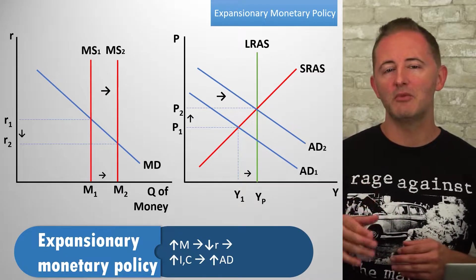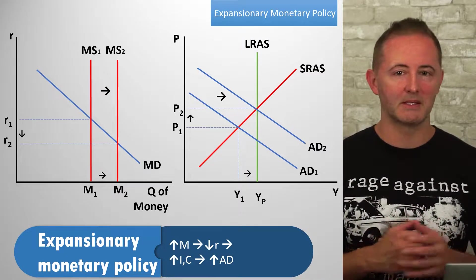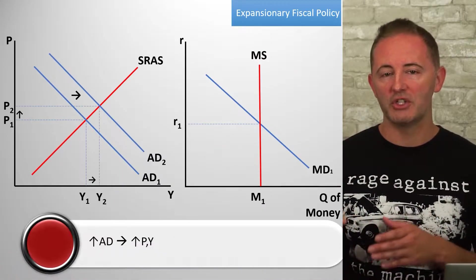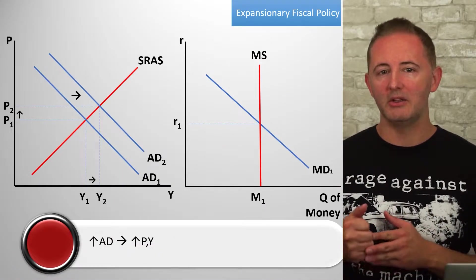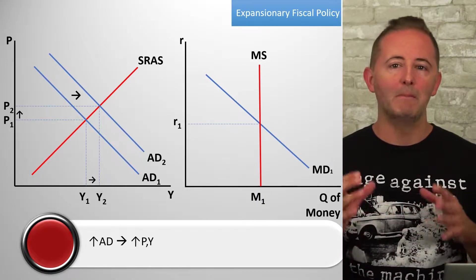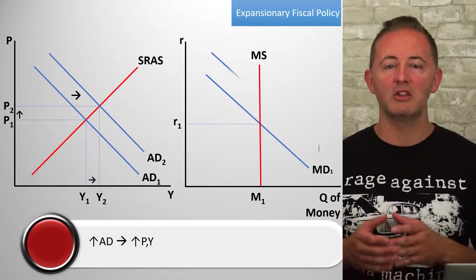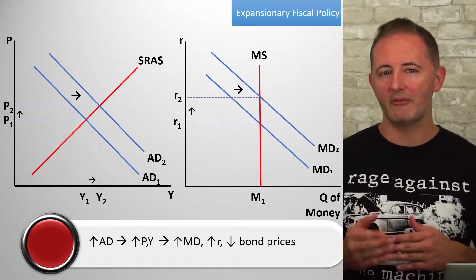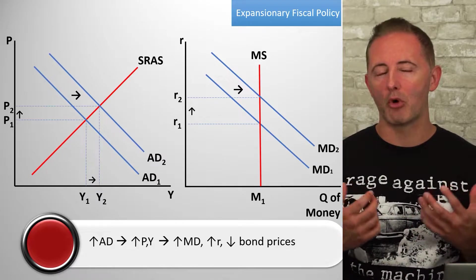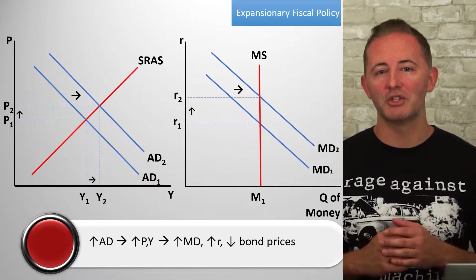Let's do it again with expansionary fiscal policy. This one starts with the AD curve shifting right, leading to a higher price level and increased output. On the money market model, this affects the MD curve by shifting it to the right, because the price level has risen and people demand more money. This MD curve shift raises the nominal interest rate.